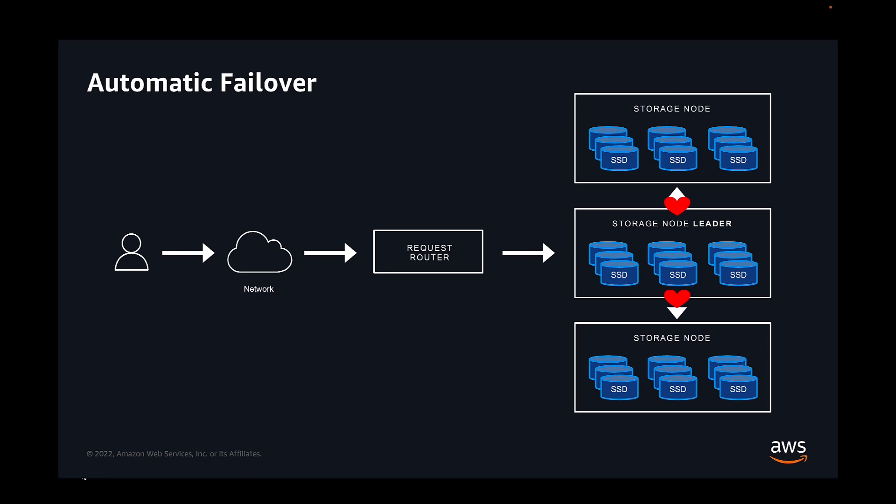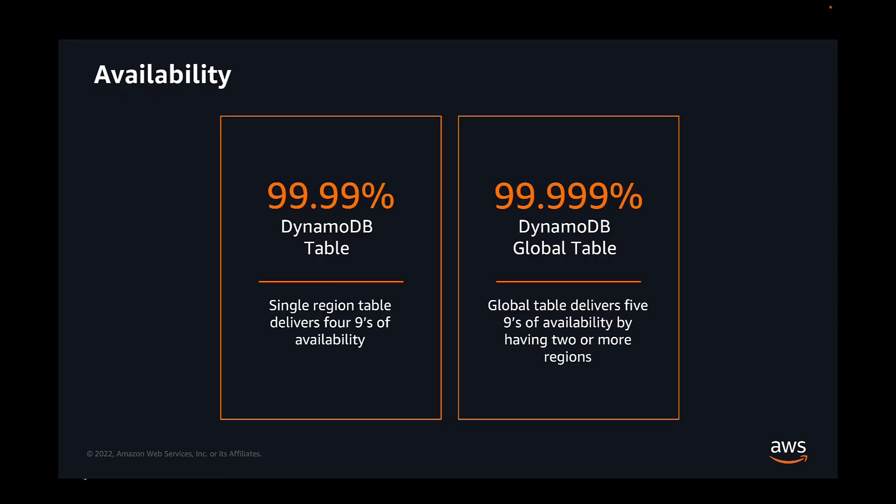DynamoDB uses partitions across multiple availability zones, and partition management is handled entirely by DynamoDB. Writes to a table are handled by that partition's leader storage node, which may seem like a single point of failure. To overcome this, DynamoDB uses Paxos to manage leader elections. Each of the storage nodes participates in a membership group and heartbeats amongst each other every 1.5 seconds. If the leader's heartbeats are not received, one of the storage nodes will offer to take over as leader, and the node with the latest version will be elected.